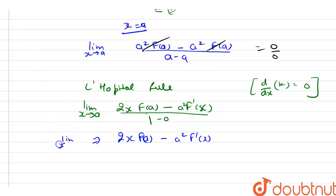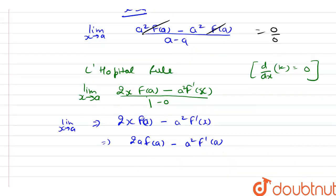This is limit x tends to a. So let's put x as a. So from here, we have 2a f(a) minus a squared f'(a). And here, this is our final answer. Thank you.